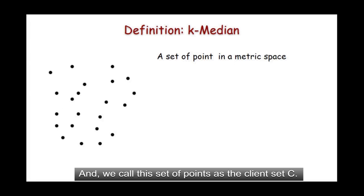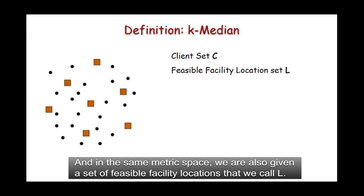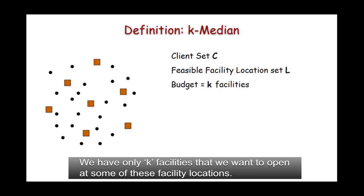And we call this set of points as the clients C. And in the same metric space, we are also given a set of feasible facility locations that we call capital L. Now, the concept is that a client goes to a facility to avail some kind of service. However, we have only limited number of facilities. We have only k facilities that we want to open at some of these facility locations.